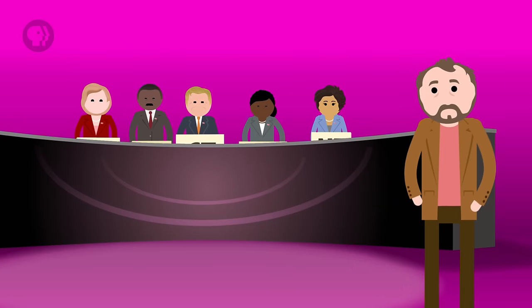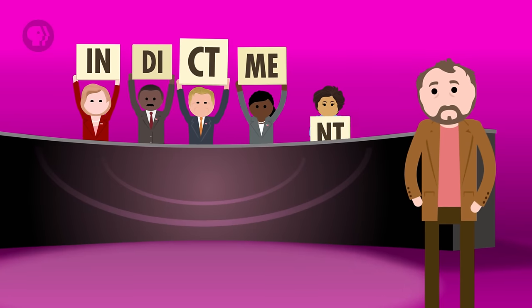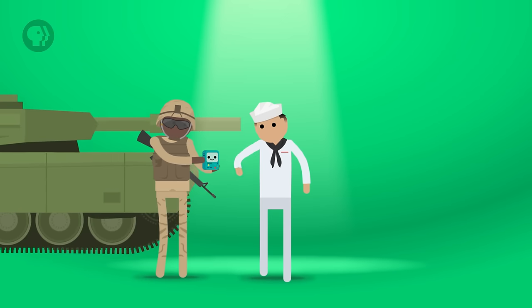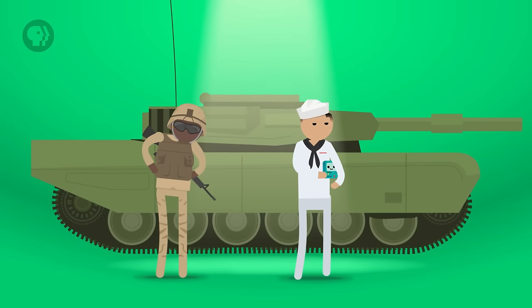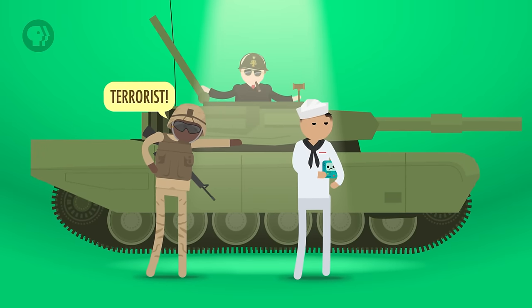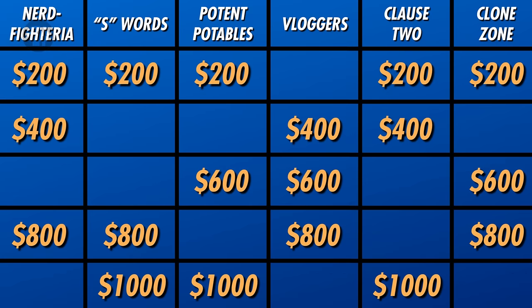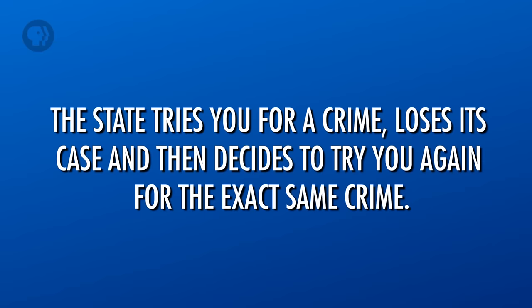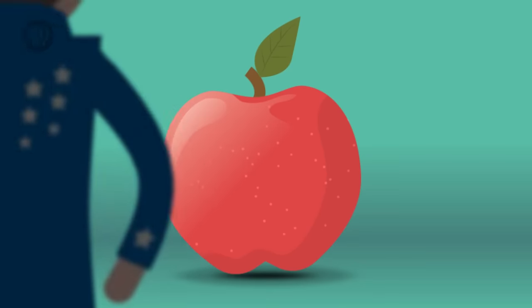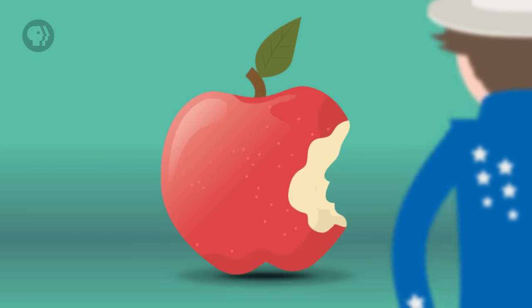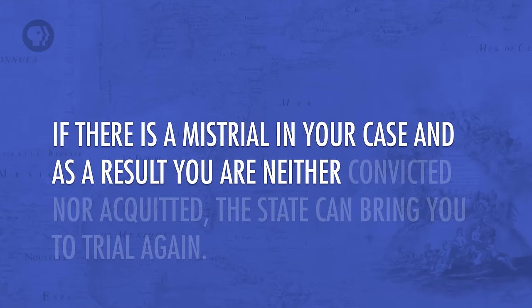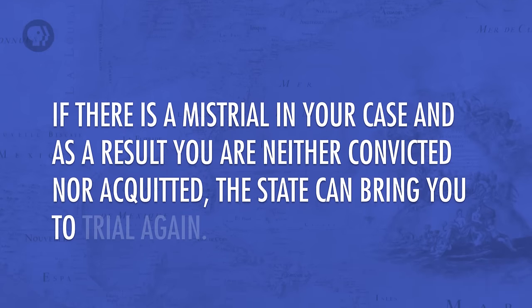If the grand jury decides there is enough evidence, they issue an indictment, and unless you make a plea deal, you will have a trial — which almost never happens because people usually make plea deals. Soldiers and sailors who commit crimes get tried in military courts, which becomes quite important when talking about potential terrorists. The second protection is against double jeopardy — not the good Alex Trebek kind. The bad kind is where the state tries you for a crime, loses its case, and then decides to try you again for the exact same crime. The government only gets one bite at the apple. The double jeopardy clause only applies to convictions; if there is a mistrial and you are neither convicted nor acquitted, the state can bring you to trial again.